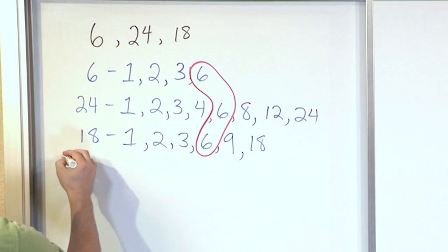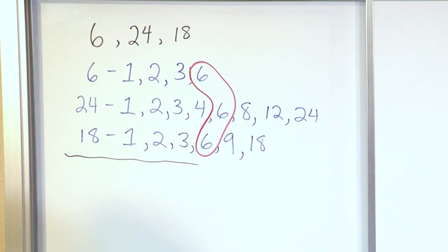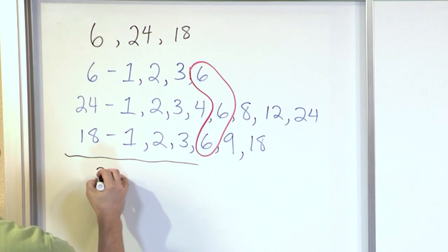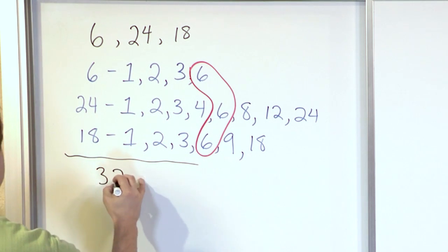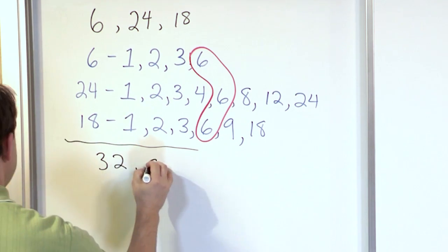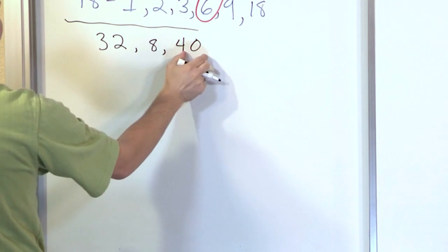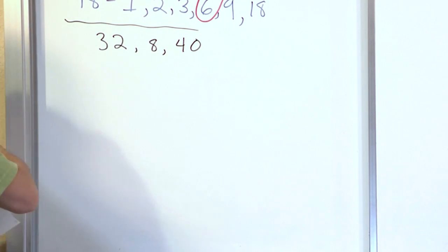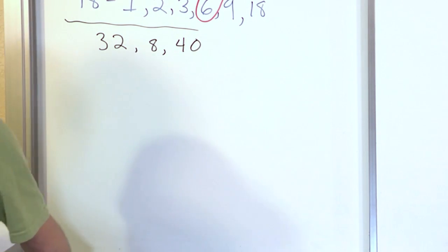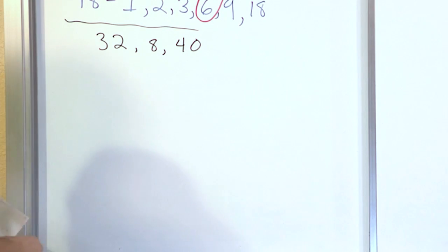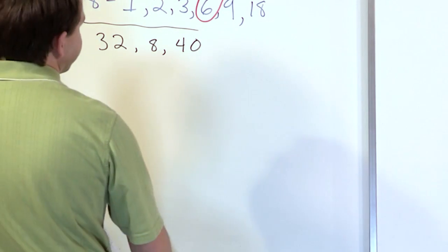So let's do another one. Let's say we're going to find the greatest common factor between the numbers 32, 8, and 40. Of course, the larger the numbers you have, the more factors you're going to have, because more things can be multiplied together to give you that number.